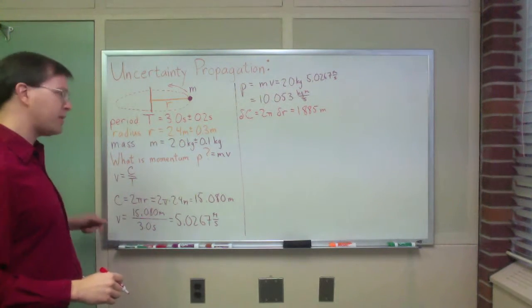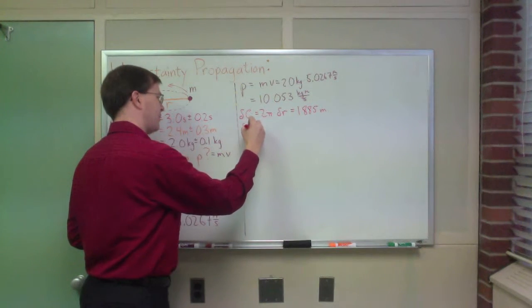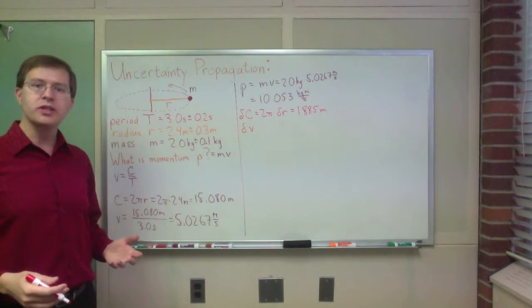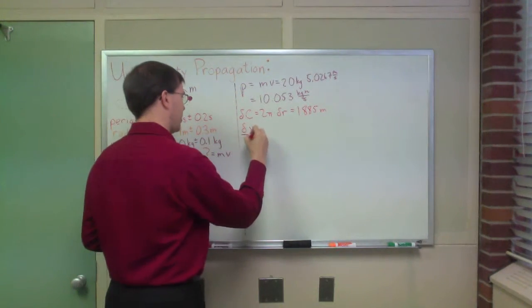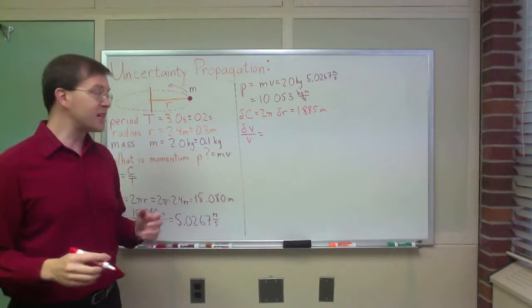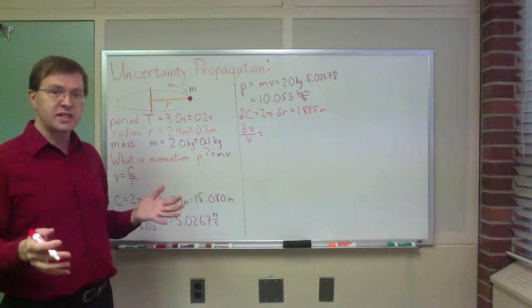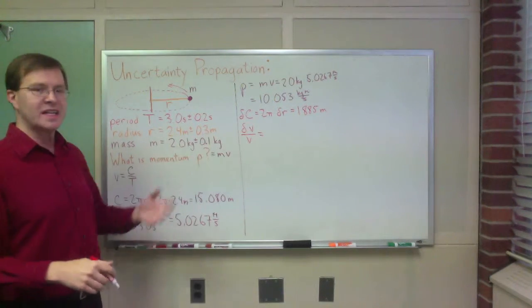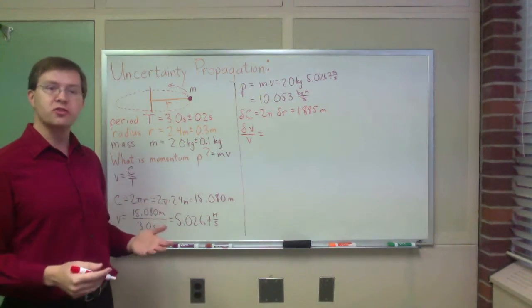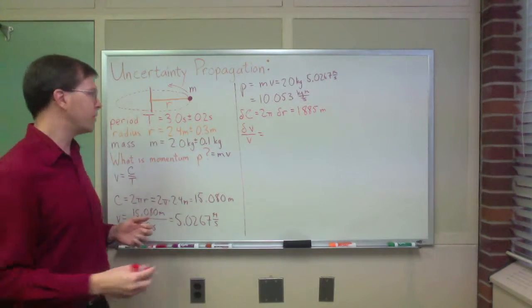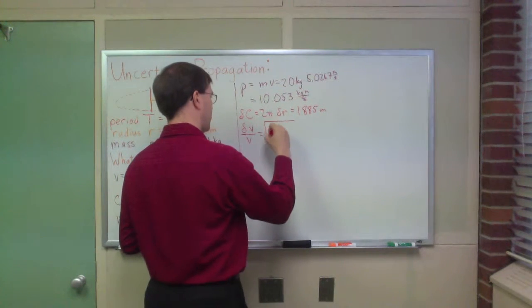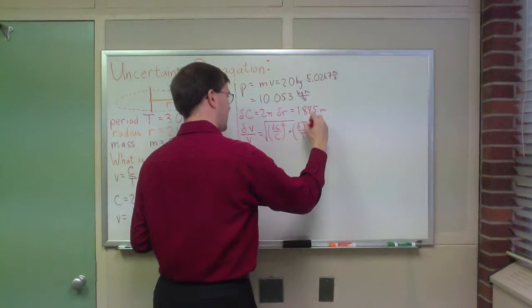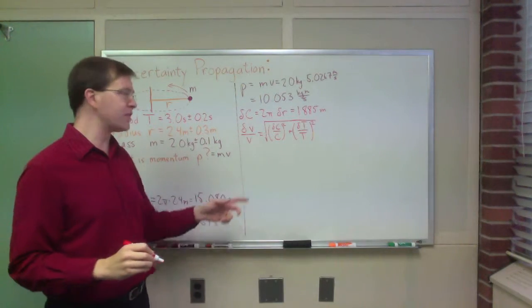I can then come and say, what's my uncertainty in the speed going to be? Delta v. Well, v is a quotient, circumference divided by time. And so because it's a quotient, I use relative uncertainties instead of absolute uncertainties. Delta v over v equals, and because these are independent measurements, clearly there is no dependence on my uncertainty in r and my uncertainty in t. One's a stopwatch, the other is a ruler or something. So these are independent, hopefully random, hopefully normally distributed uncertainties, errors, and so I can add in quadrature. And so this is going to be equal to the square root of delta c over c squared plus delta t over t squared. That's my adding quadrature of relative uncertainties for a quotient.